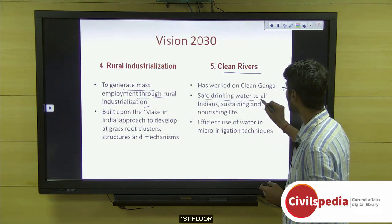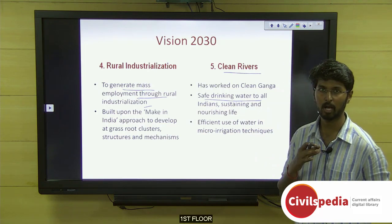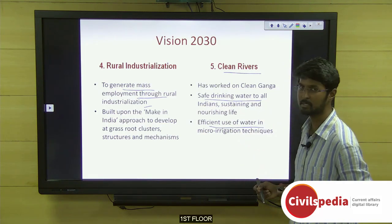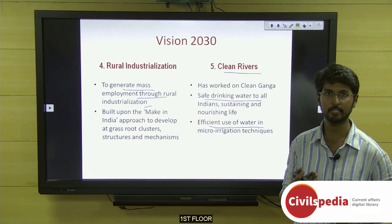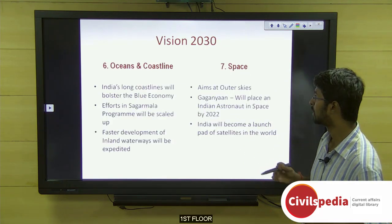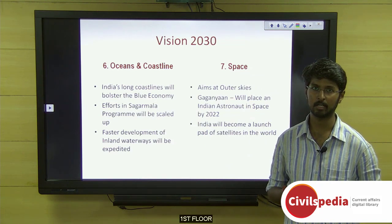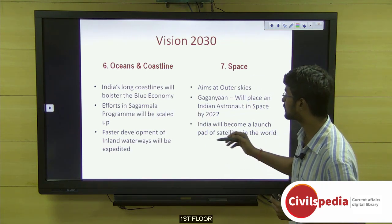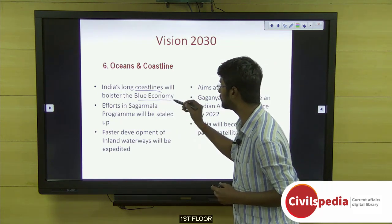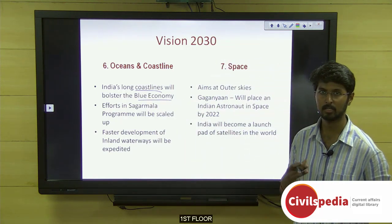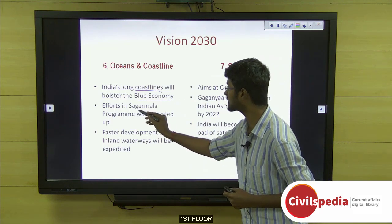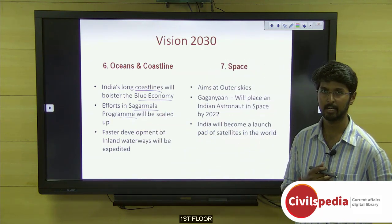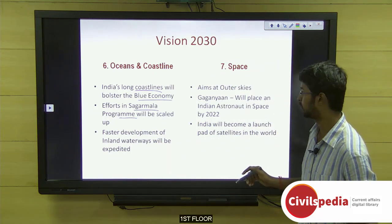The fifth dimension is clean rivers. The government has taken a major interest in cleaning the Ganga through the Clean Ganga Mission, and aims to extend this to all rivers. It also aims to provide safe drinking water to all Indians and to efficiently use water through micro irrigation techniques in agriculture. The sixth dimension covers oceans and coastline: India's large coastline will bolster the blue economy (fisheries), and the Sagarmala program for ports development will be scaled up.